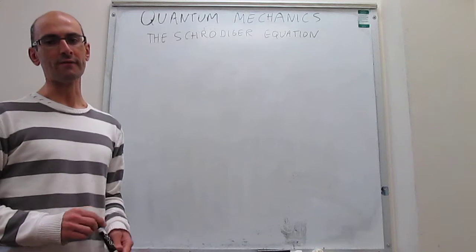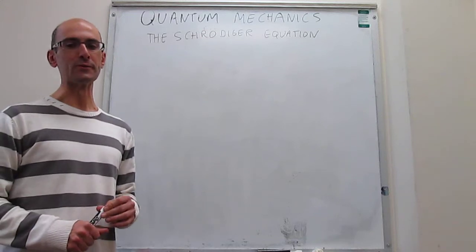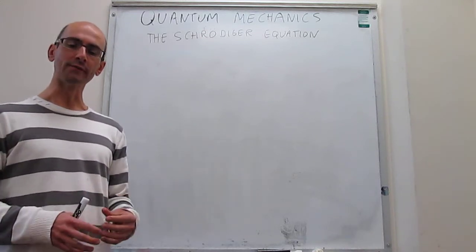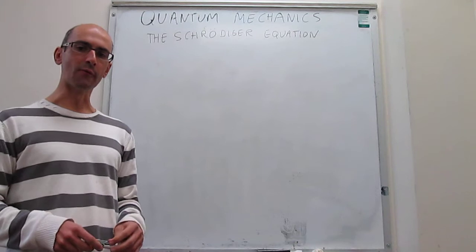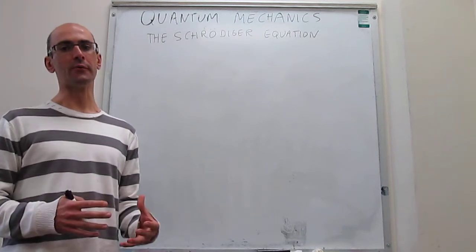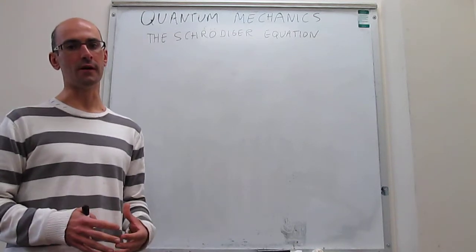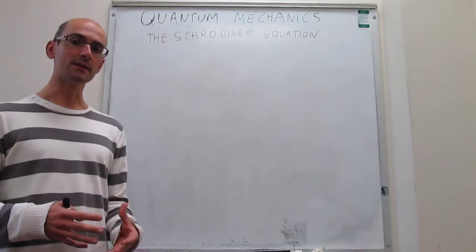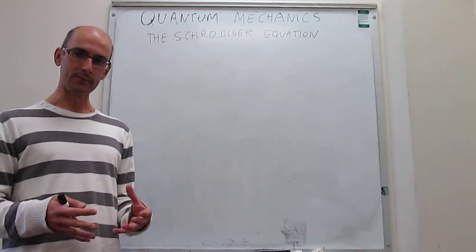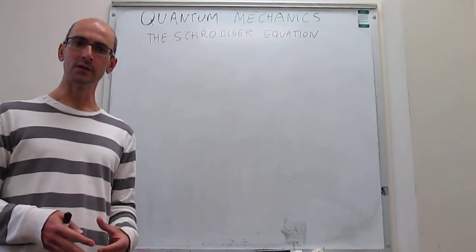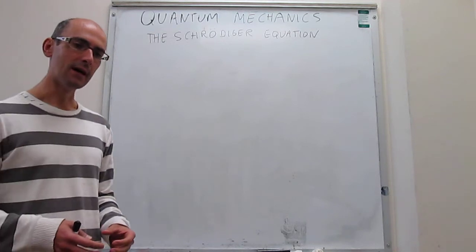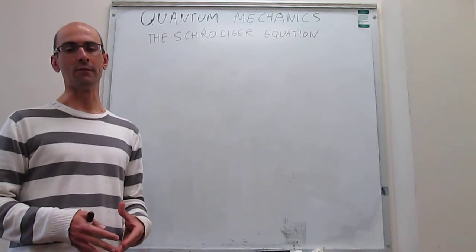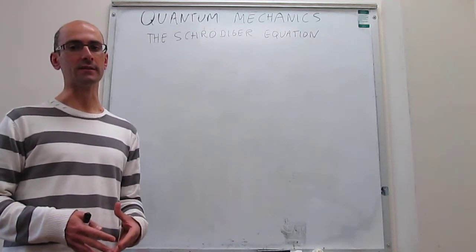In this video we describe the Schrödinger equation. In our prior videos we introduced the concept of quantum mechanics. One of the most important aspects of quantum mechanics is that it only really applies to very small particles, like electrons or very light atoms. For microscopic objects, quantum behavior can generally be neglected.